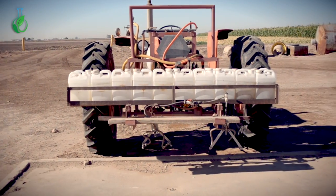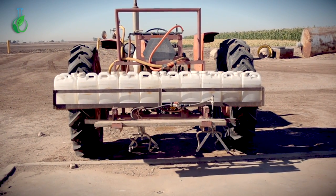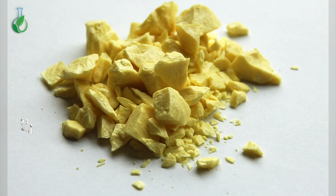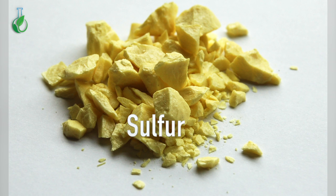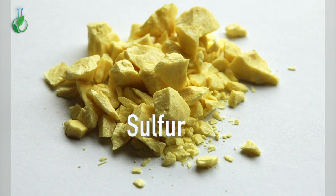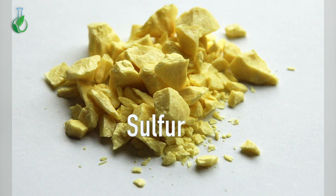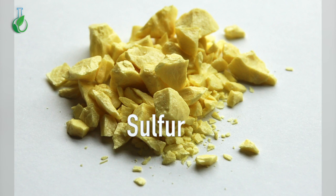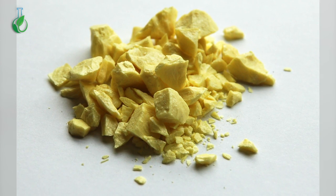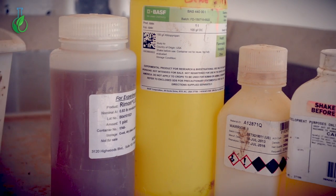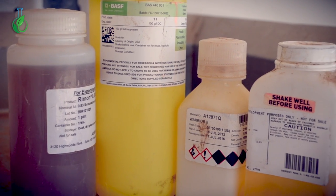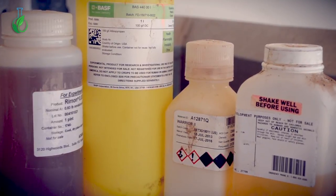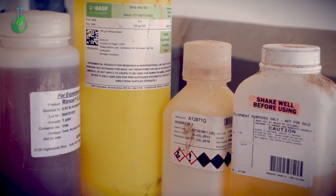Fungicides can be very effective powdery mildew management tools. Sulfur, one of the oldest fungicides known, is very effective in preventing development of powdery mildew. Other fungicides, often with systemic properties, can also be highly effective.